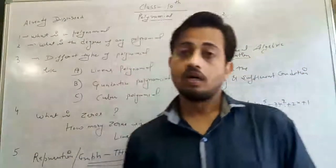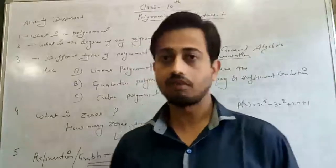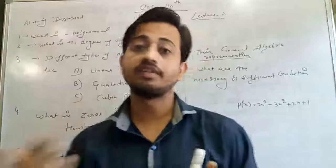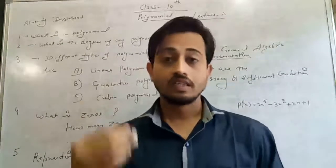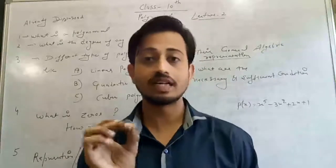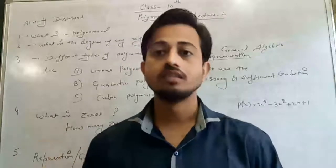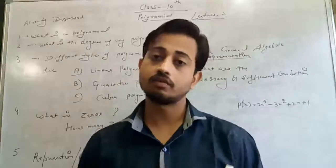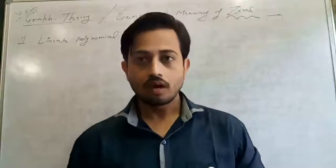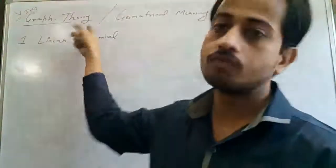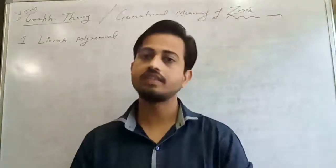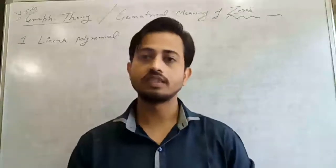Now we move on to our next topic — the first topic of this lecture. In this lecture we will discuss graphical representation, or graph theory: how we represent the graph of a linear polynomial, quadratic polynomial, and cubic polynomial, and what are their geometrical representations or geometrical meanings. We will study the graph theory and calculate the geometrical meaning of zeros of these three types of polynomials.